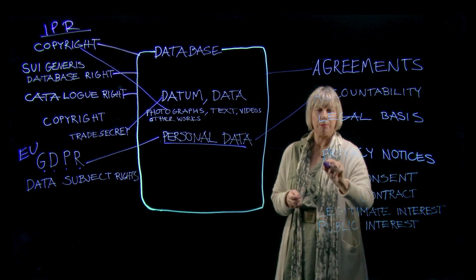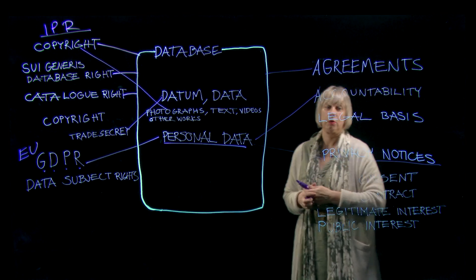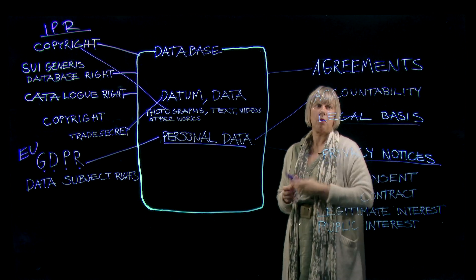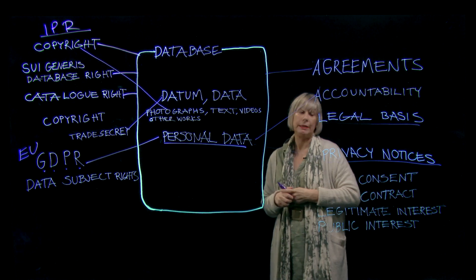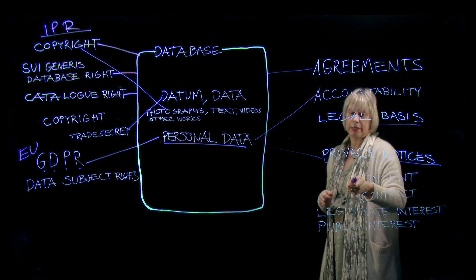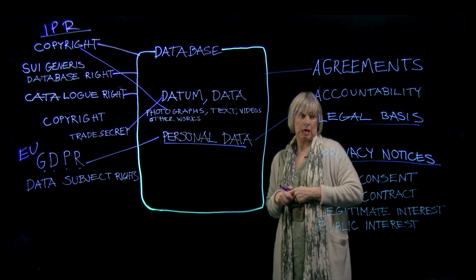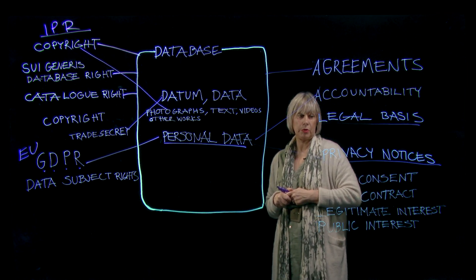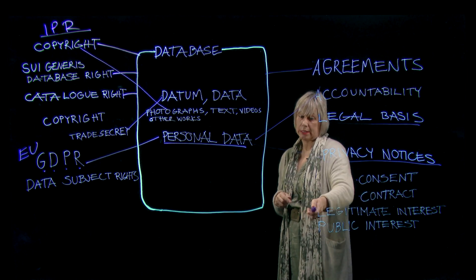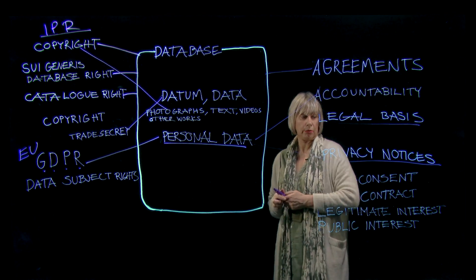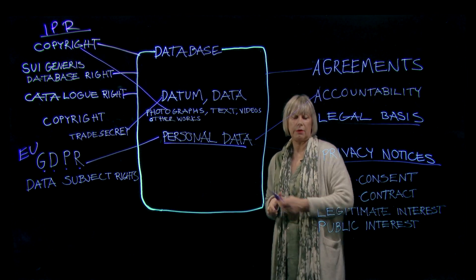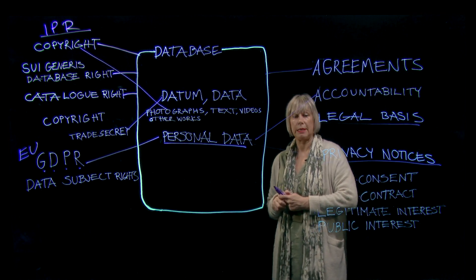You need to inform the data subject with privacy notices. You have to explain the legal basis — what is your legal base for handling the personal data? In the privacy notice you would explain whether it is consent. If it is consent, you also have to get the consent of the person. It can be performance of a contract or for a business. It can in some basic cases be legitimate interest, and for example in the context of university research it can be scientific research or a task in the public interest.